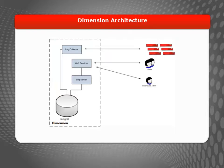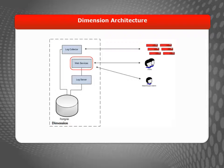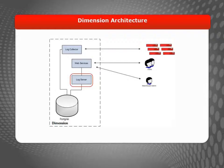How does Dimension work? The Dimension Log Collector receives logs from your network security devices. Your users can connect to the Dimension Web UI to view and interact with dashboards and reports based on that log data. The administrator can also use the Web UI to manage the Dimension deployment and back-end database, which acts as the centralized storage location for the log and reporting data.